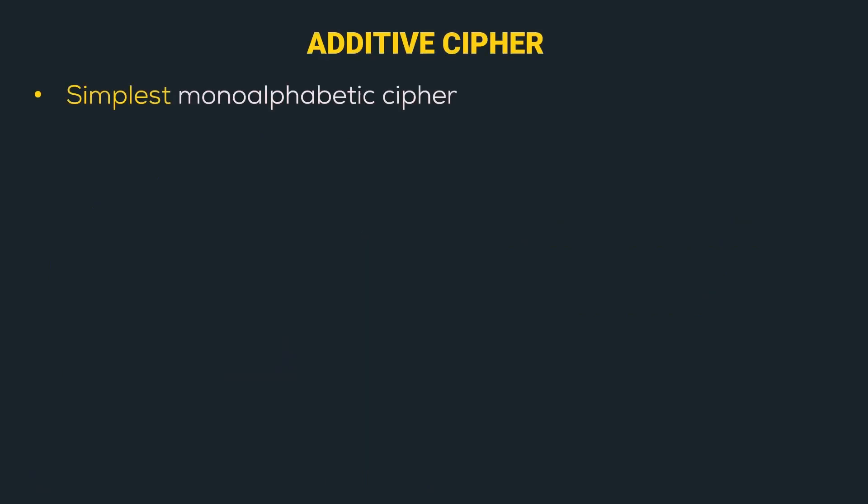Additive ciphers is the simplest monoalphabetic cipher. And why is it the simplest? Well, you will know about that once we understand its working. So let's define it mathematically.